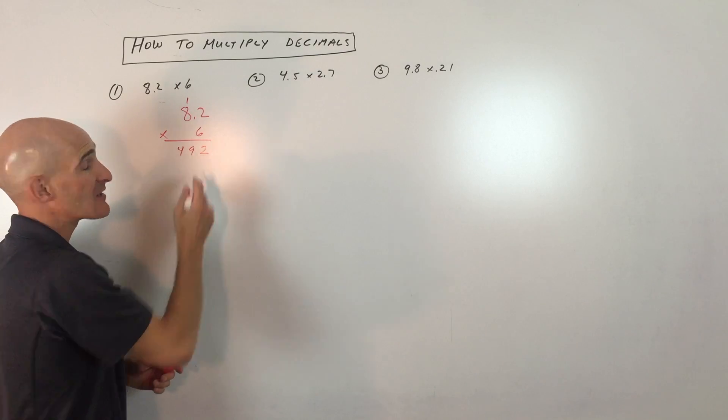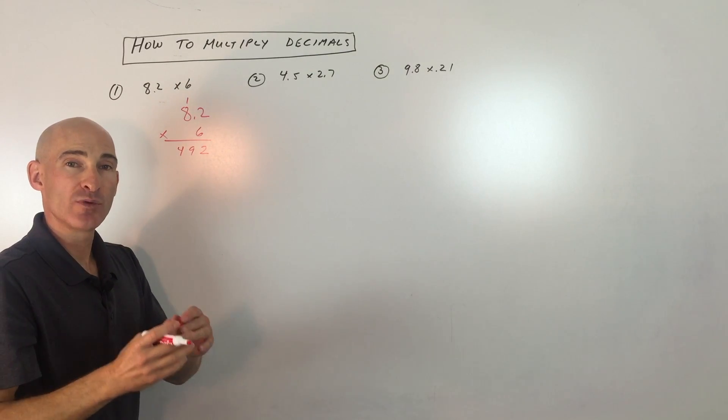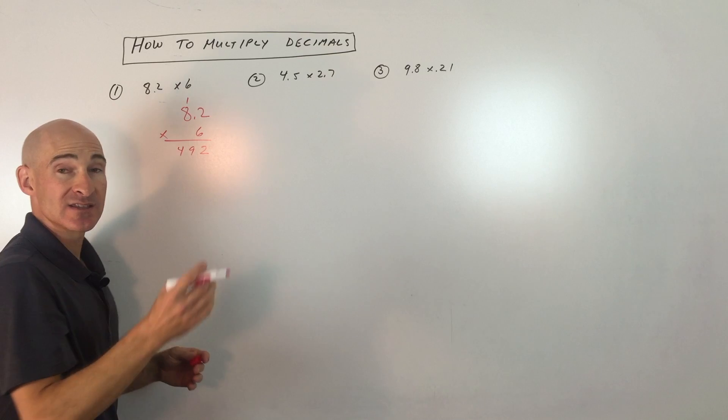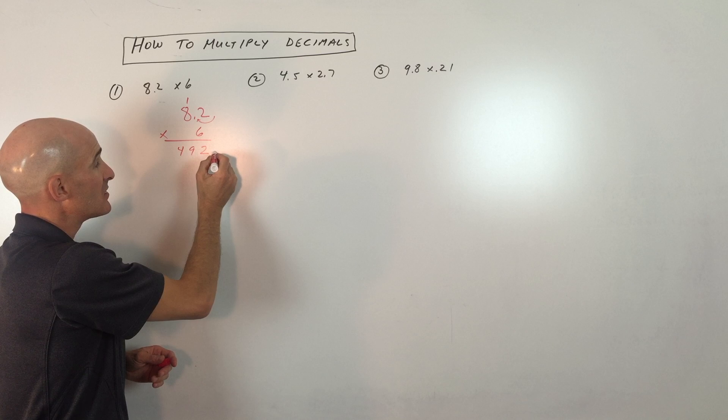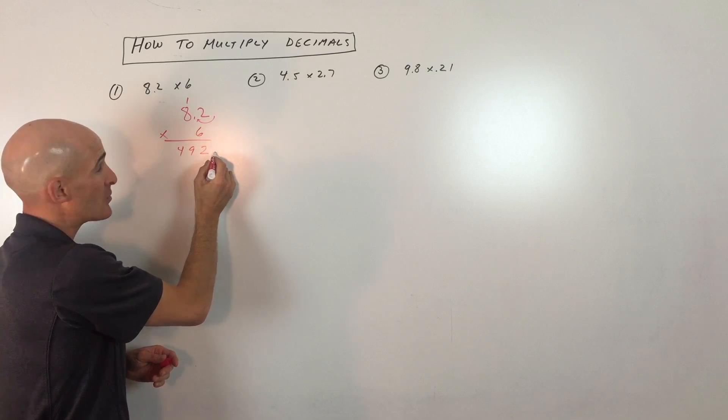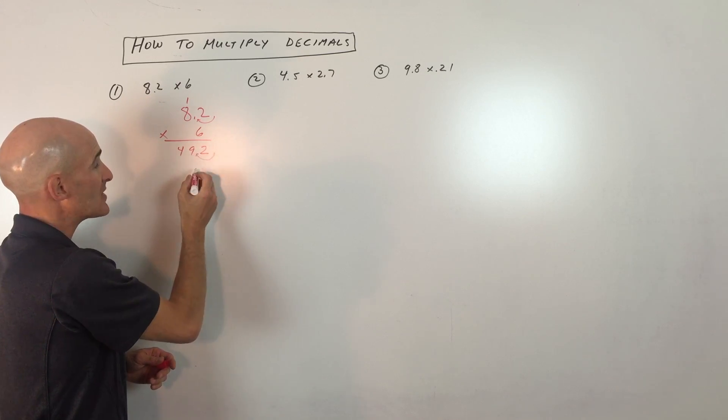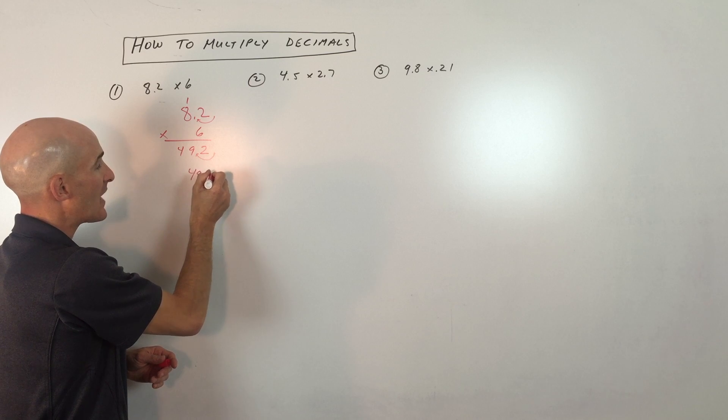Now the only thing you have to do is count how many decimal places the decimal has been moved. In this case, you can see it's been moved one place. So you take the decimal, which is here at the right side or the end of the number, and you move that one place. So the answer here is 49.2.